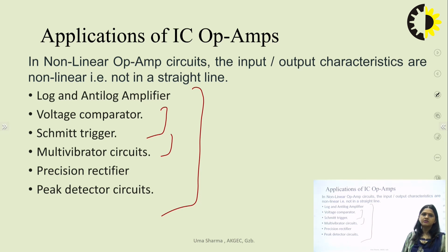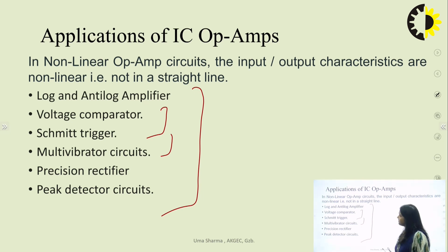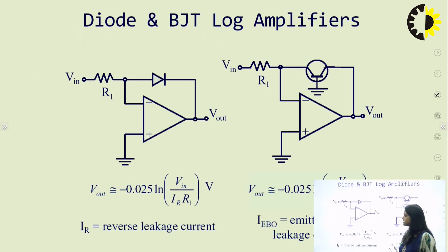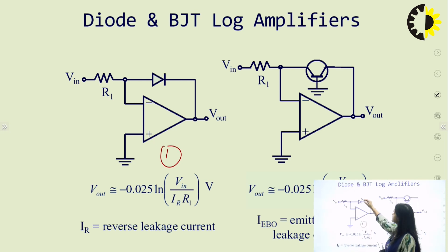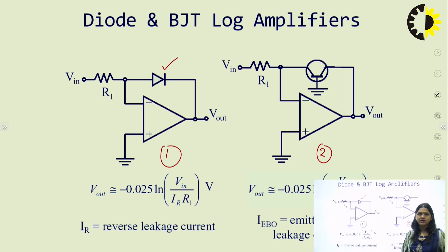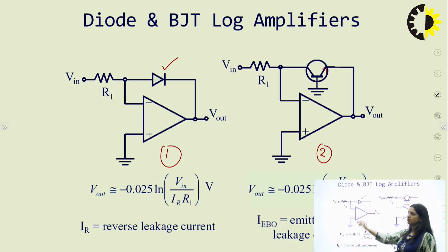As the name suggests, a log amplifier is designed to calculate the log of the input signal, whereas an anti-log amplifier produces the anti-log of the input. Since it is a non-linear application, we require a non-linear device in the circuit — a diode or transistor. In diagram 1, the log amplifier uses a diode in the feedback path. In diagram 2, the log amplifier uses a BJT transistor in the feedback path.